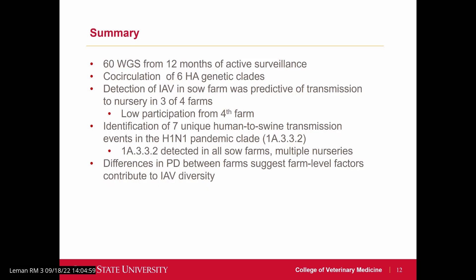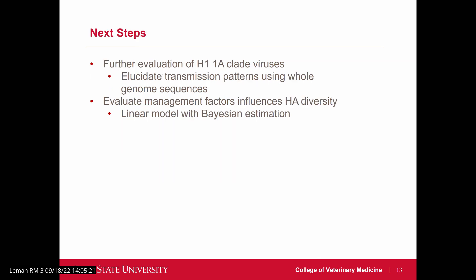In summary, we did 12 months of active surveillance and found 60 whole genome sequences. We detected that detection in the sow farm was predictive of transmission to the nursery in three out of the four farms. We identified seven unique human-to-swine transmission events, and also differences in phylogenetic diversity. We'd like to keep going, especially with the H1-1A clade, and also evaluate those management factors that are mutable — things we could change to actually make an impact.